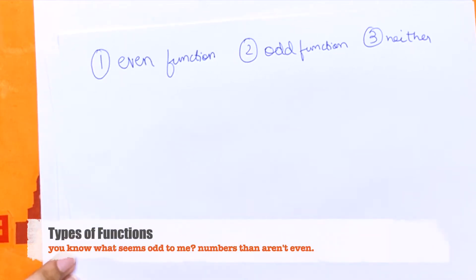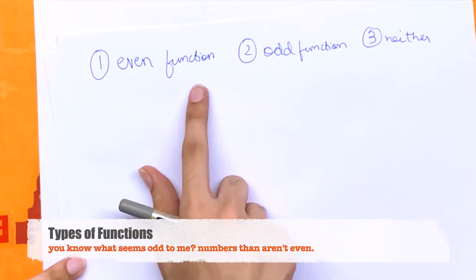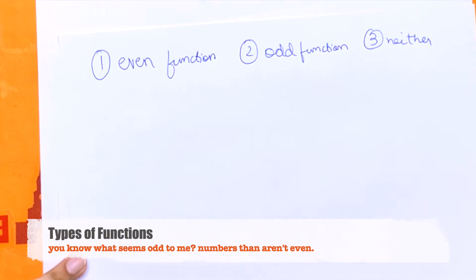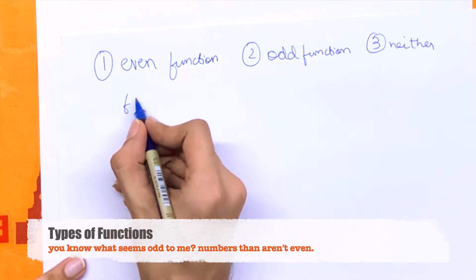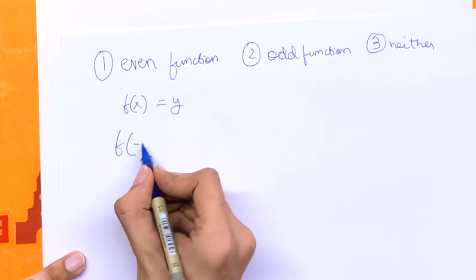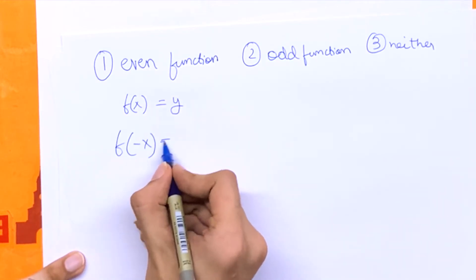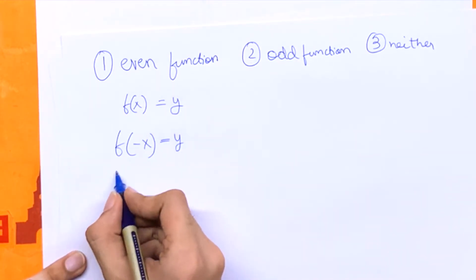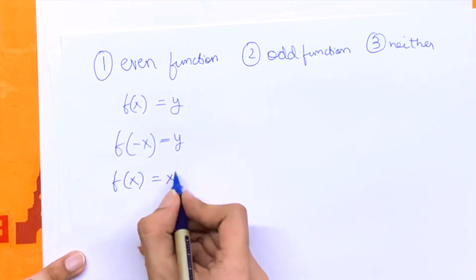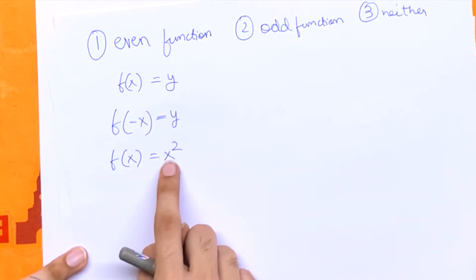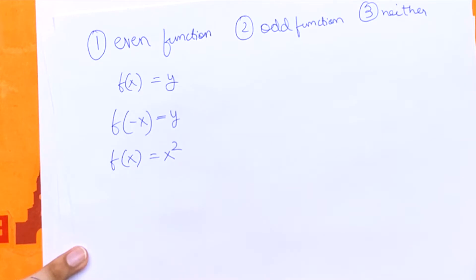There are three types of functions: an even function, an odd function, or neither. An even function is defined as: if f(x) equals y, then f(-x) also equals y. An example is f(x) = x². We can verify: f(-x) equals (-x)², which is just x².